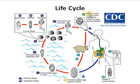The encysted metacercariae enter the body of the next host. In the duodenum region of the intestine, the cyst is removed and the organism attaches and inhabits within the small intestine of humans.